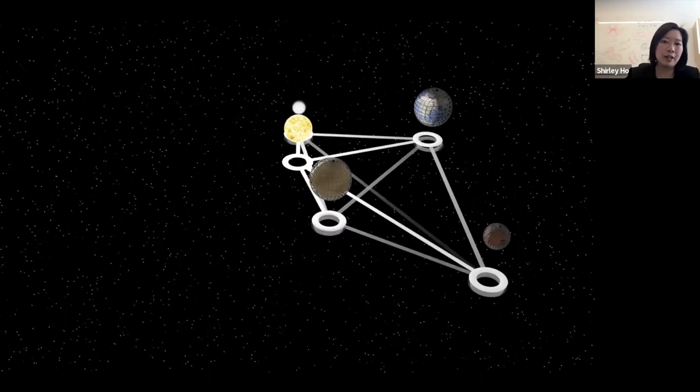So conclusion, there has been a dramatic adoption of deep learning in the astrophysics community in the past couple of years, and I'm very happy about this. There comes also a significant pushback to this, I call it technical debt. We accumulate as we use tools that are not completely understood by anyone. I demonstrate it's possible to move towards a more interpretable machine learning methods for the science. And we can understand a bit of the network if you're able to sparsify it. So not all network works, I think. So the number of latent parameters to interpret is relatively small using symbolic regression.